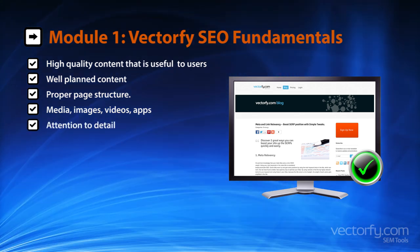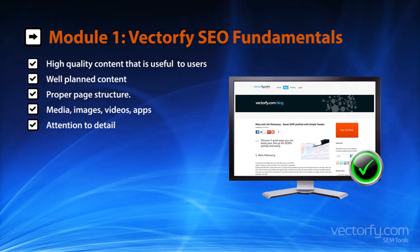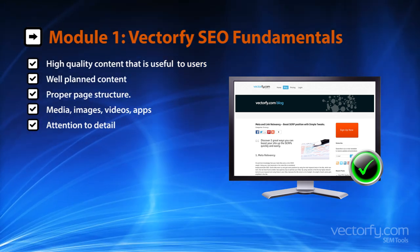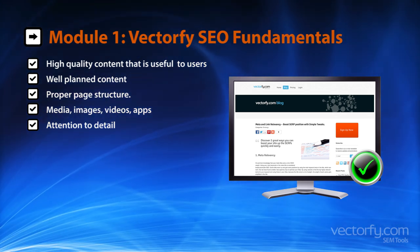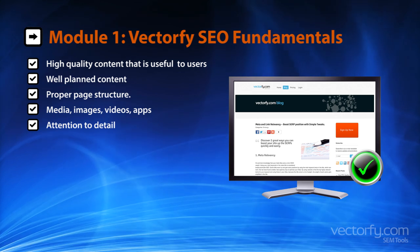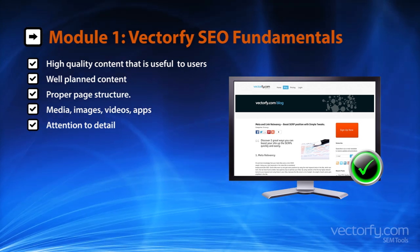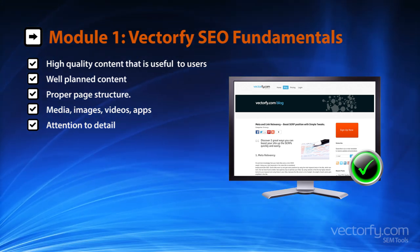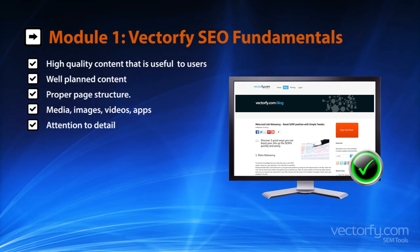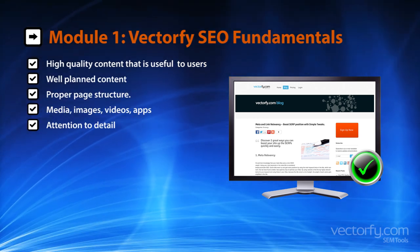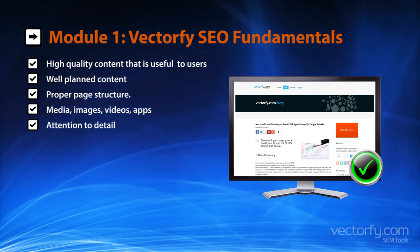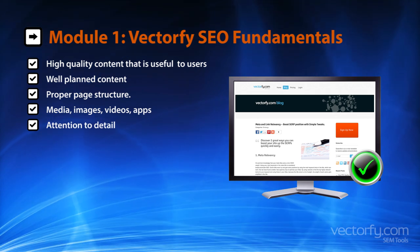5. Attention to detail. You can tell if a website has had time and care applied to it, and so can Google. Add even small things like images as list markers, custom arrows or bullet point images for headers. Use background images. Just make your content shine, because no matter how relevant you make it, it will struggle to rank without taking care and attention.